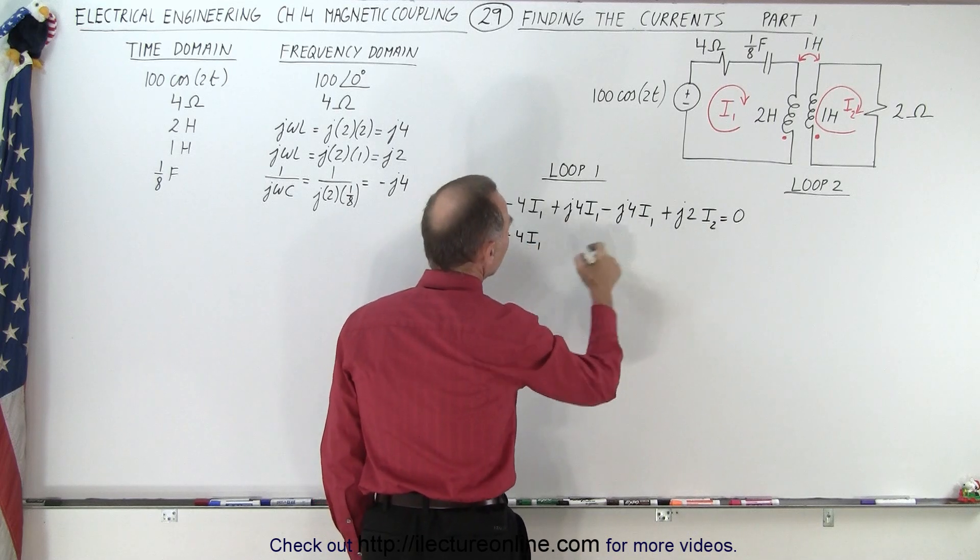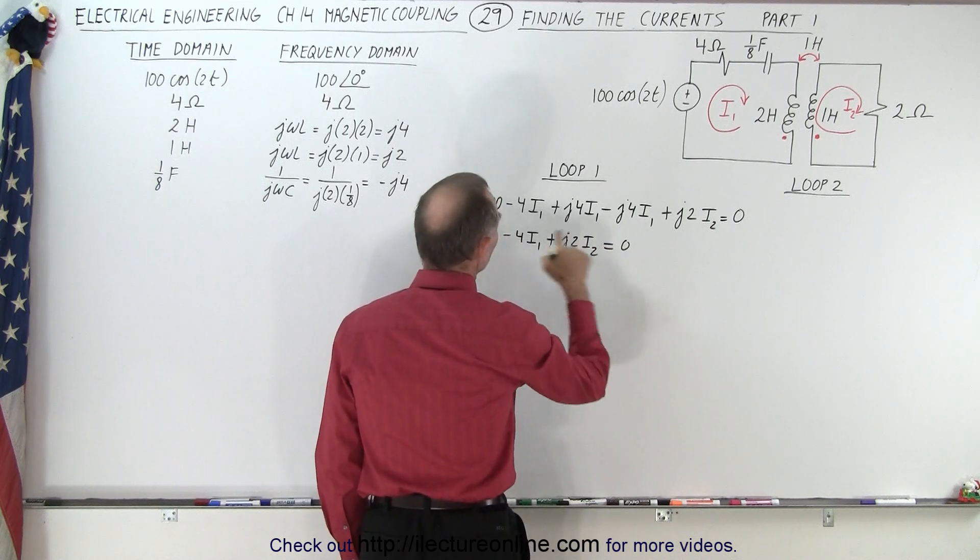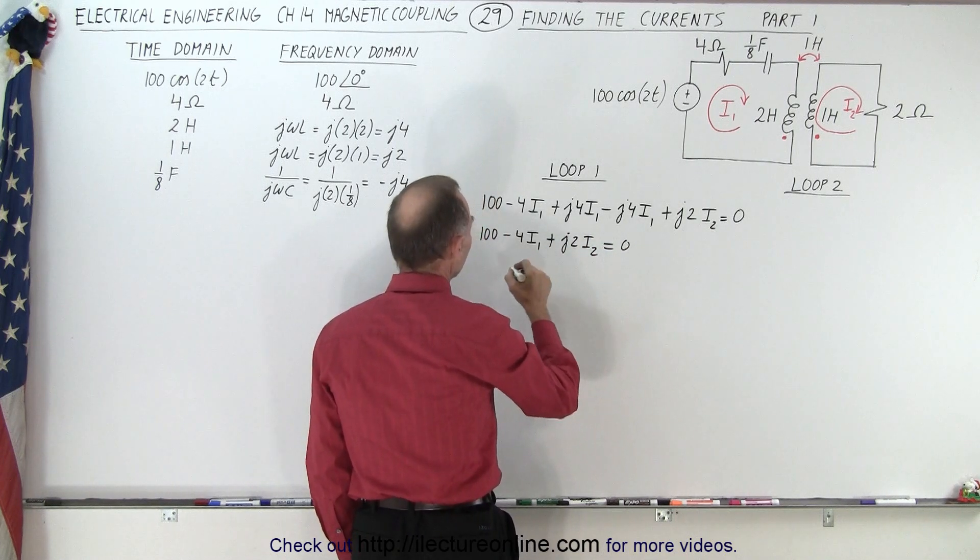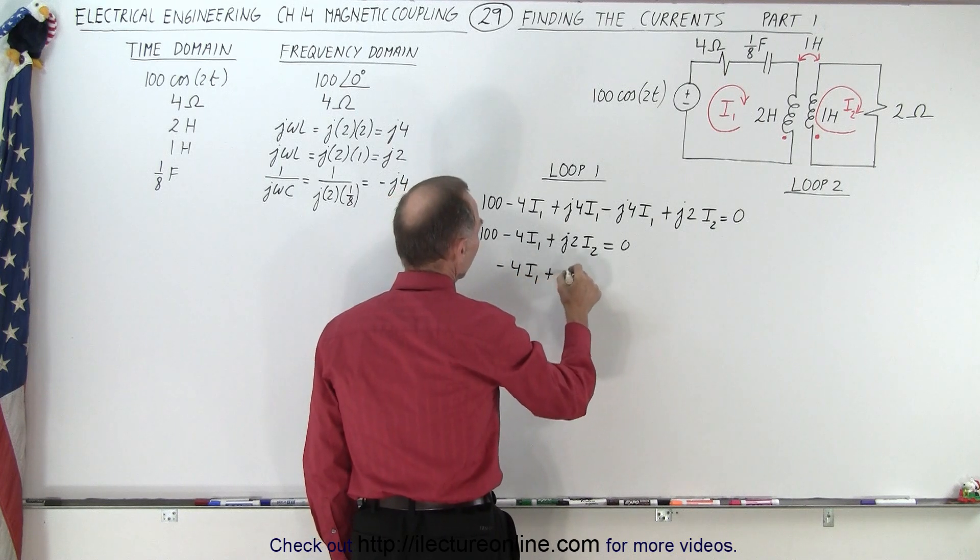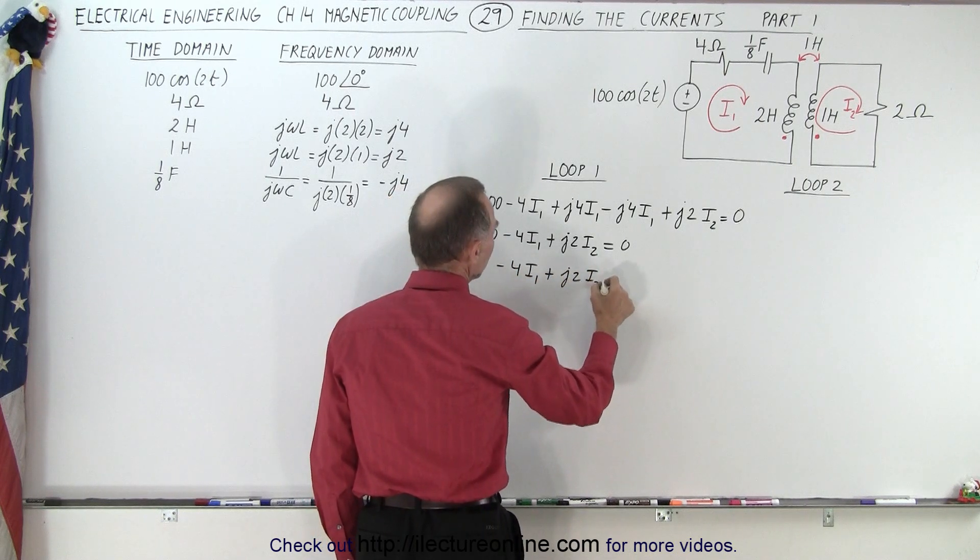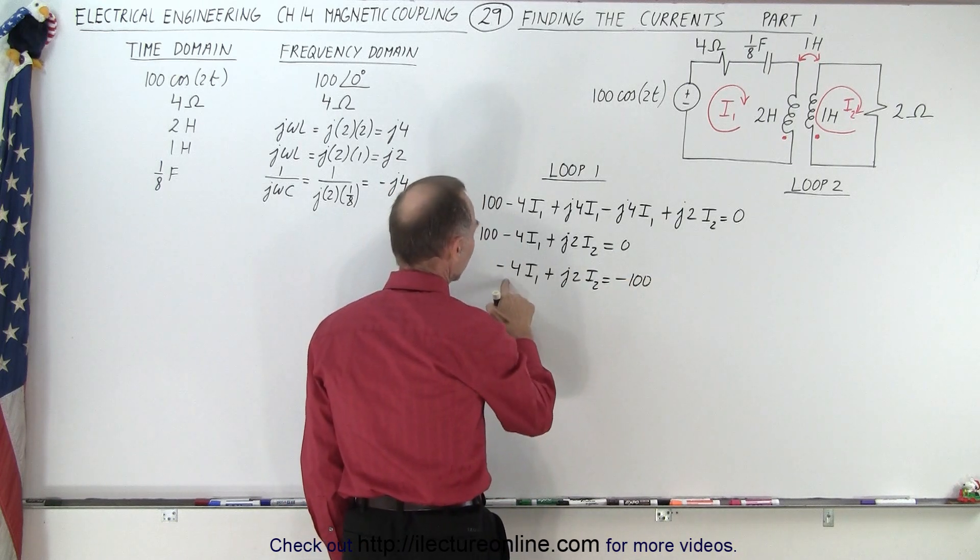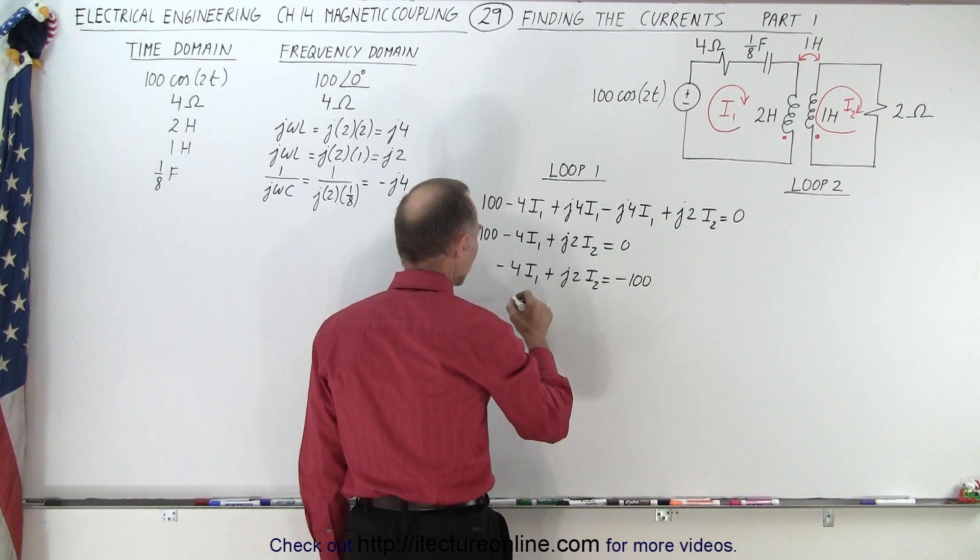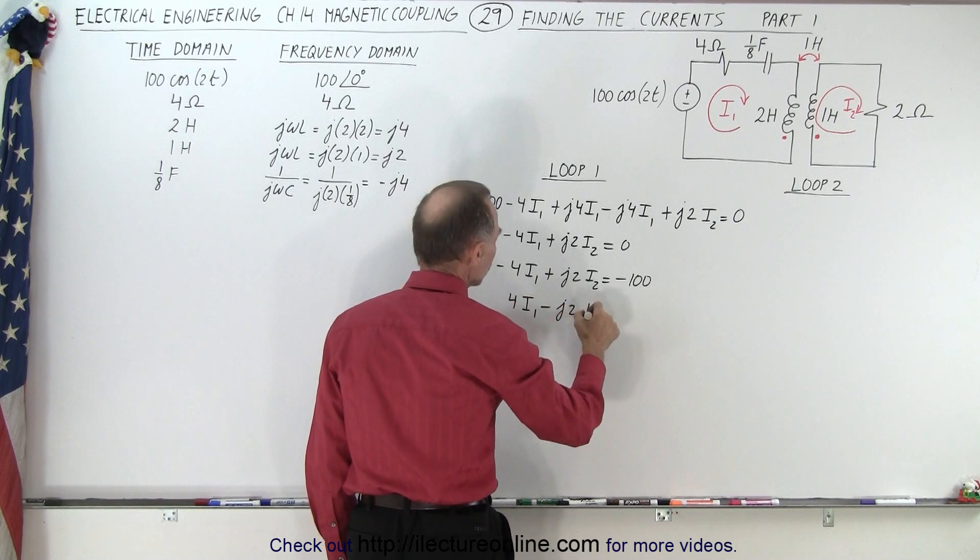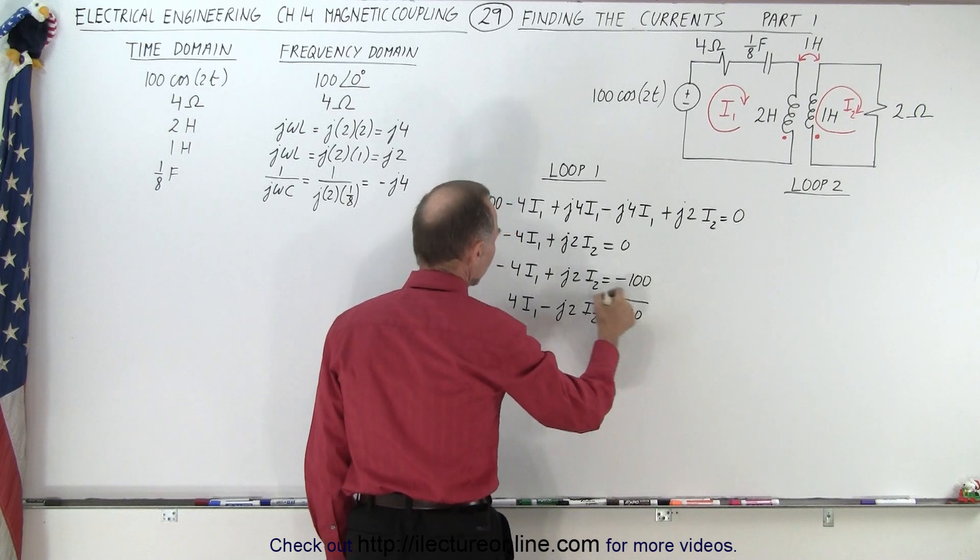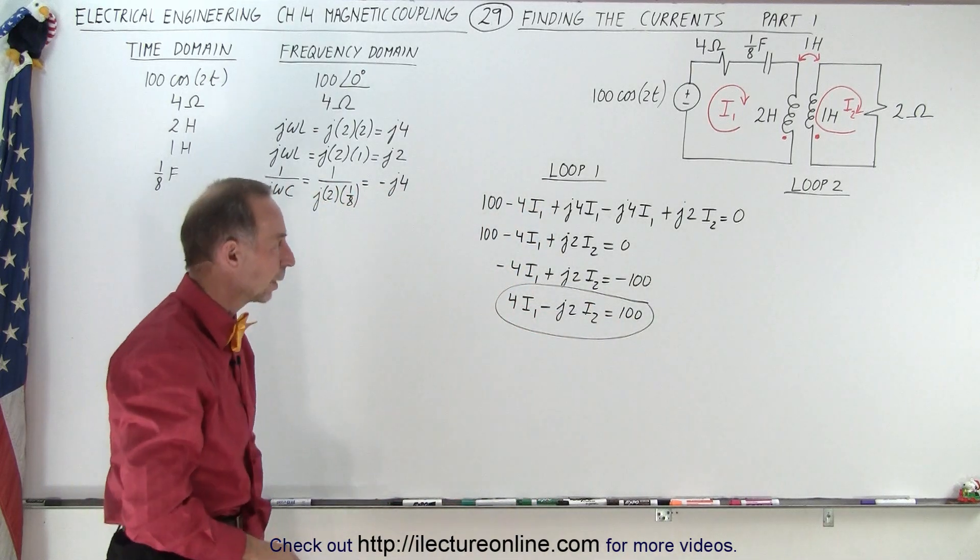So I end up with a minus 4I1, and then I end up with a plus J2I2 equals zero. Moving the 100 to the other side, I end up with a minus 4I1 plus J2I2 equals minus 100. And finally, to get rid of the negative here, I can go ahead and write it as 4I1 minus J2I2 equals a positive 100. So there is our first equation for the first loop, loop one.